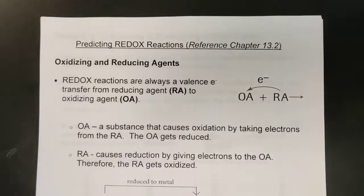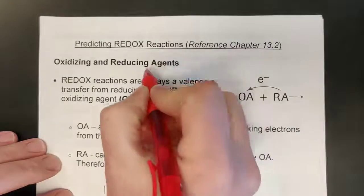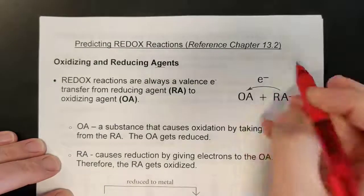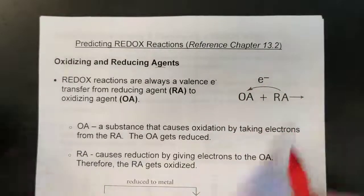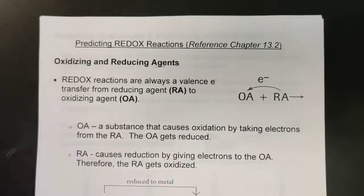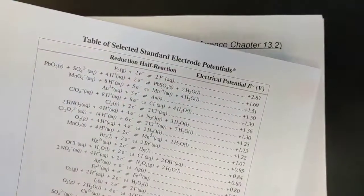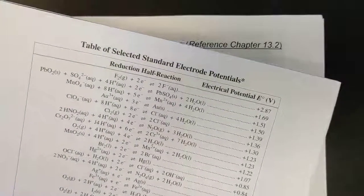Let's take a further look at redox here and get into chapter 13.2. In this one we're going to spend a little bit more time talking about that agency idea as we start looking at OAs and RAs. Something you might want to highlight and maybe even add to page seven of your data booklet — we have a data table that we're going to be using here quite a bit over the next little while.